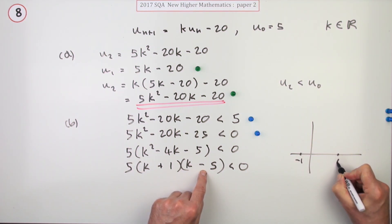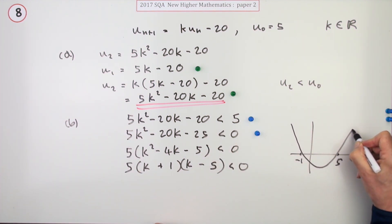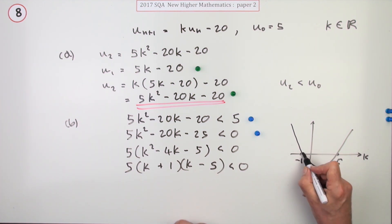And there's one at 5. It's got a positive k squared term so it must look like this. You want those answers to be less than zero, this portion here. Notice less than zero, so I'm not going to include zero there. It's the portion between them.